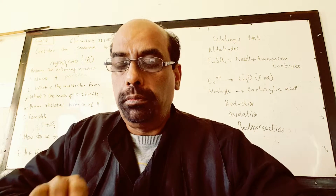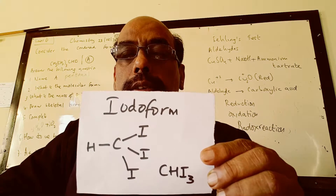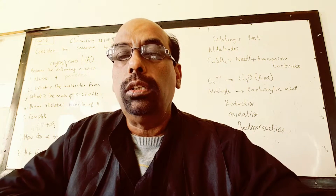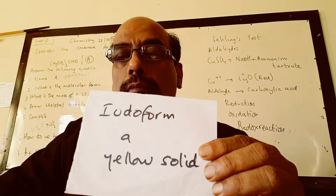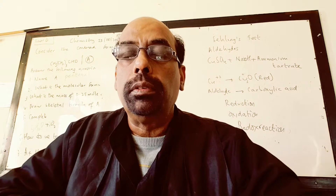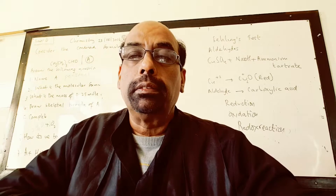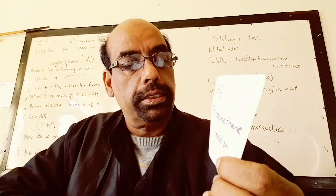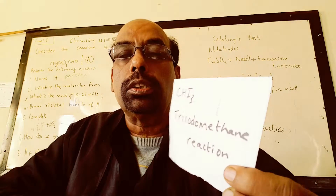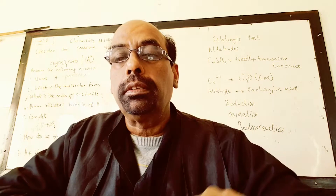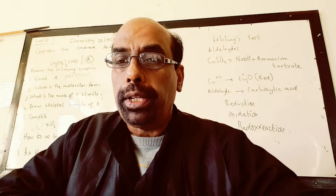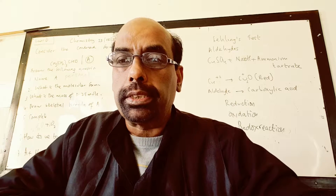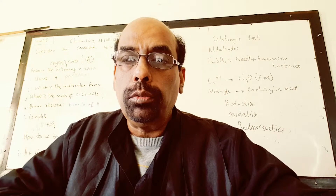Iodoform has the formula CHI3. Iodoform is a yellow solid. It is also known as tri-iodomethane — 'tri' because there are three iodines, 'iodo' because of iodine, and 'methane' because there is one carbon atom.